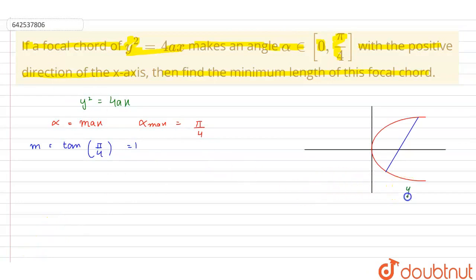Here, where this is the parabola y² equals to 4ax and this is the focus a, 0 and this line makes an angle π by 4 with the positive direction of x-axis.